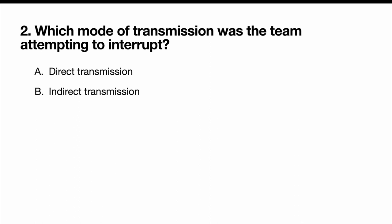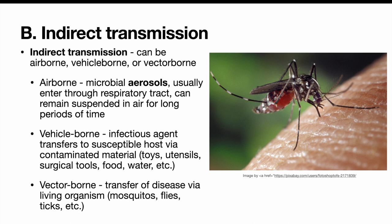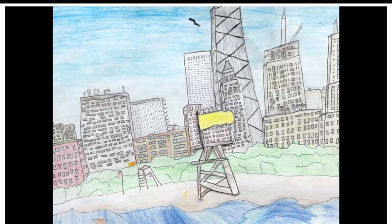Which mode of transmission was the team attempting to interrupt — direct transmission or indirect transmission? Indirect transmission. Things can be indirectly transmitted through the air, through vehicle-borne means like water and food, or vector-borne via other organisms. So this was an example of indirect transmission of a communicable disease.